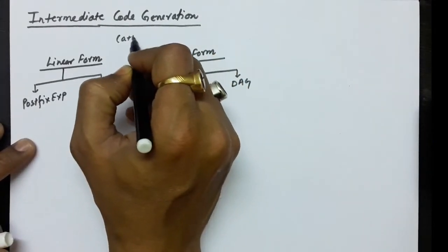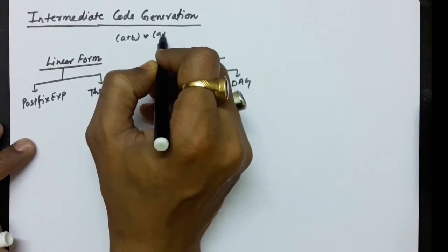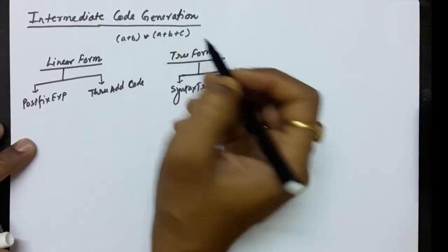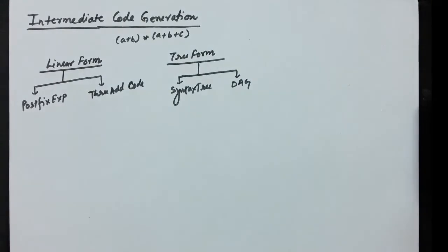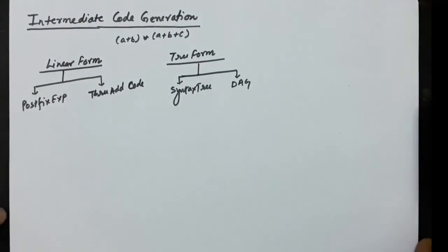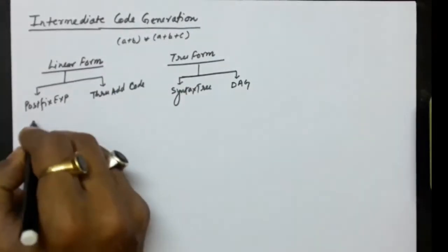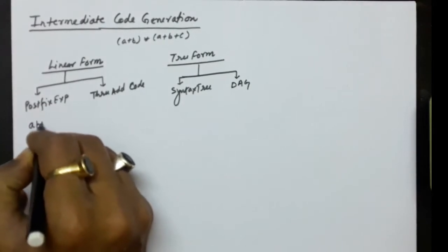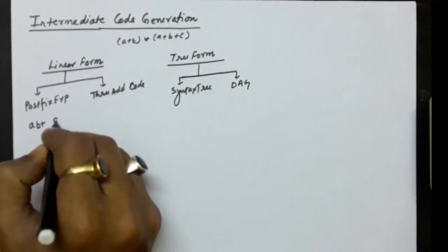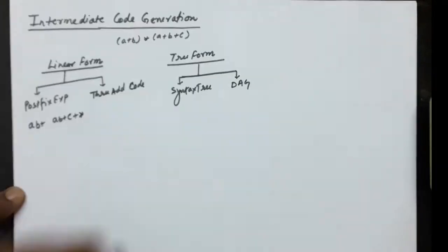Let's take the expression (a + b) multiplied with (a + b + c) and see how it can be represented in these different intermediate code forms.